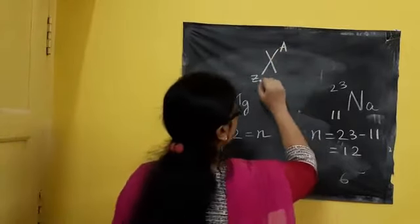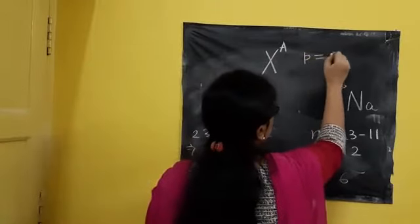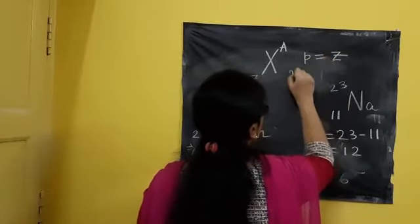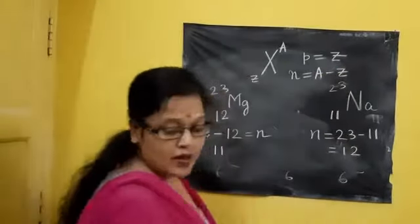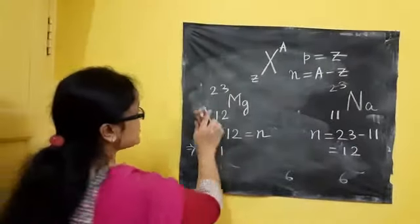So what will be the number of protons? P equals Z, exactly the same. And number of neutrons will be A minus Z. Number of neutrons will be A minus Z, nothing problem is there.